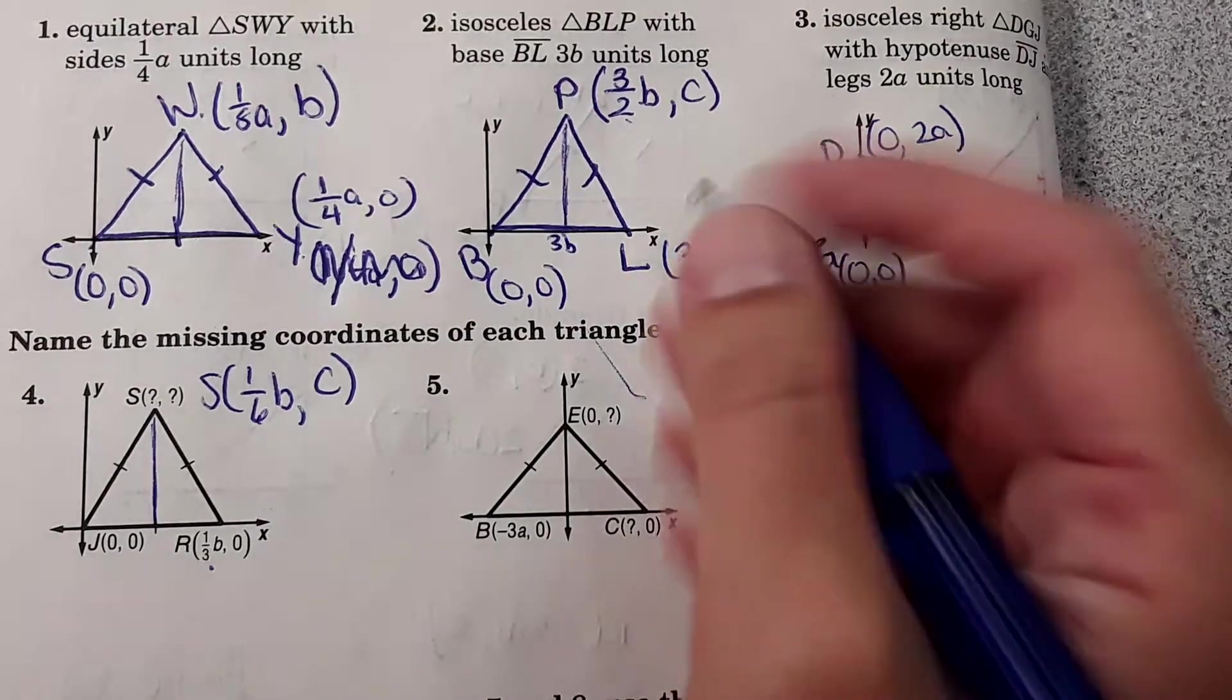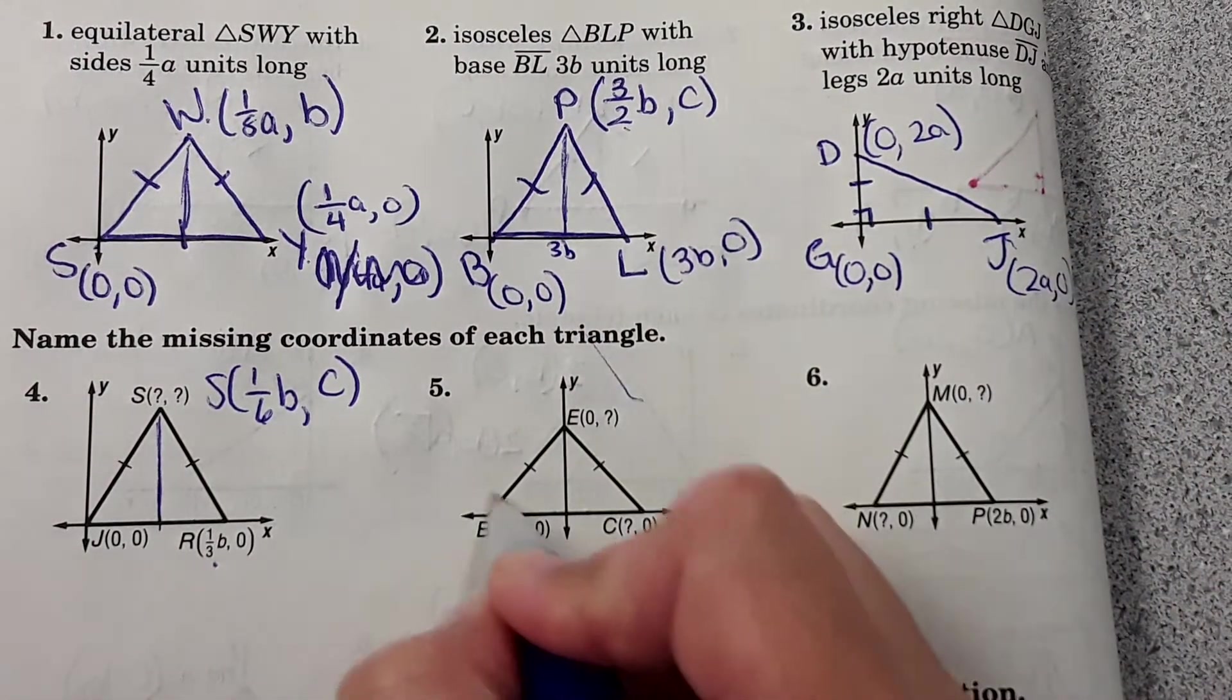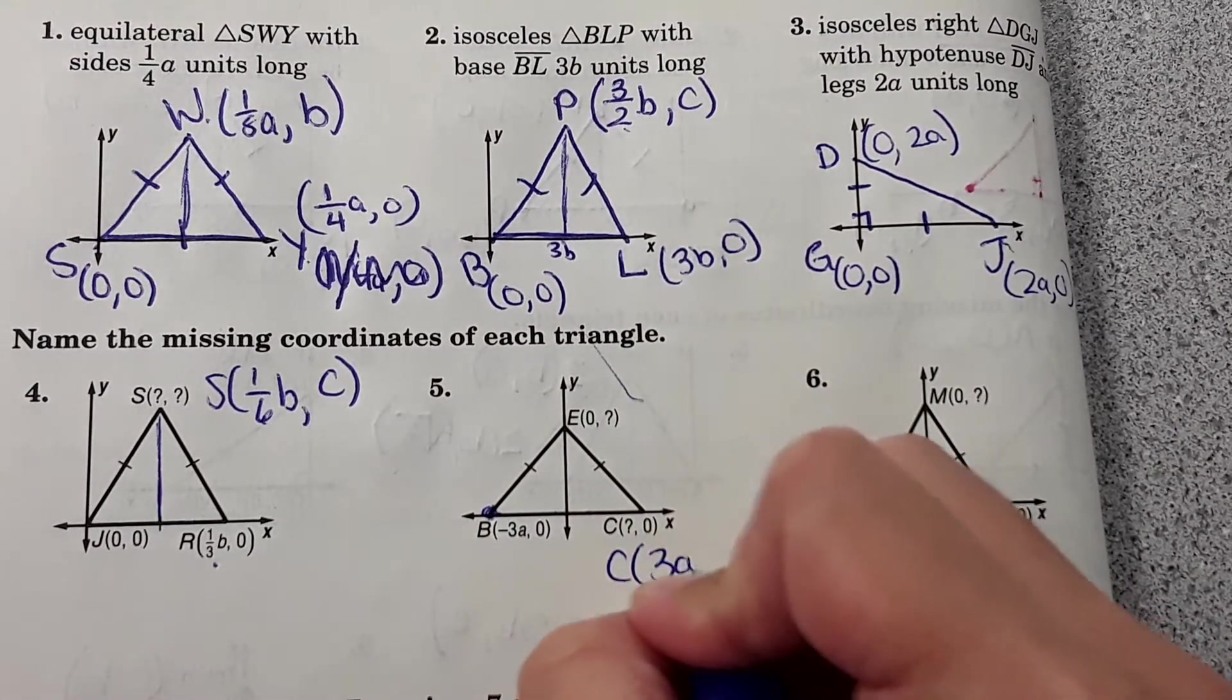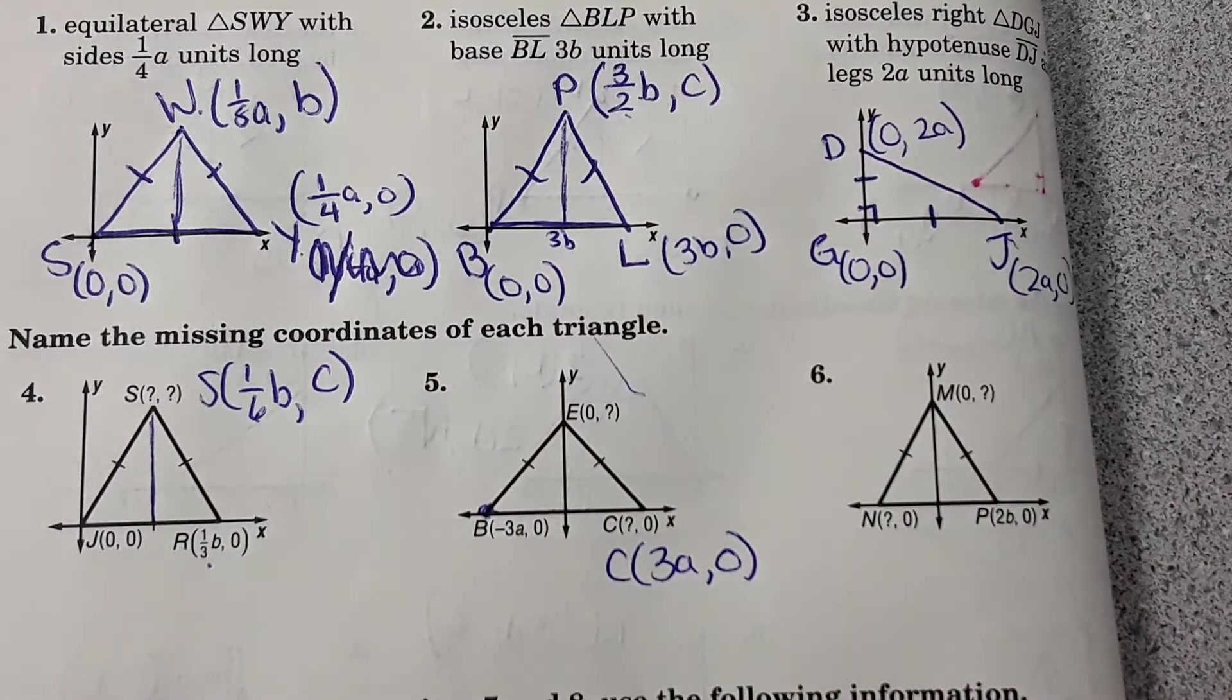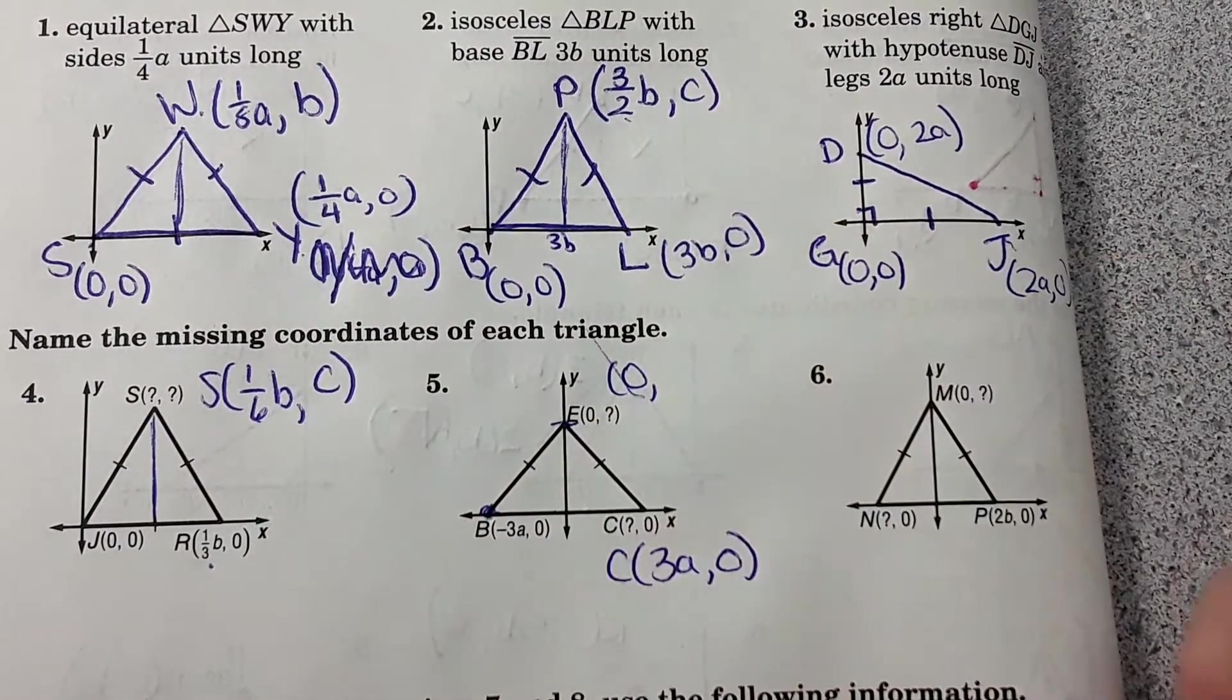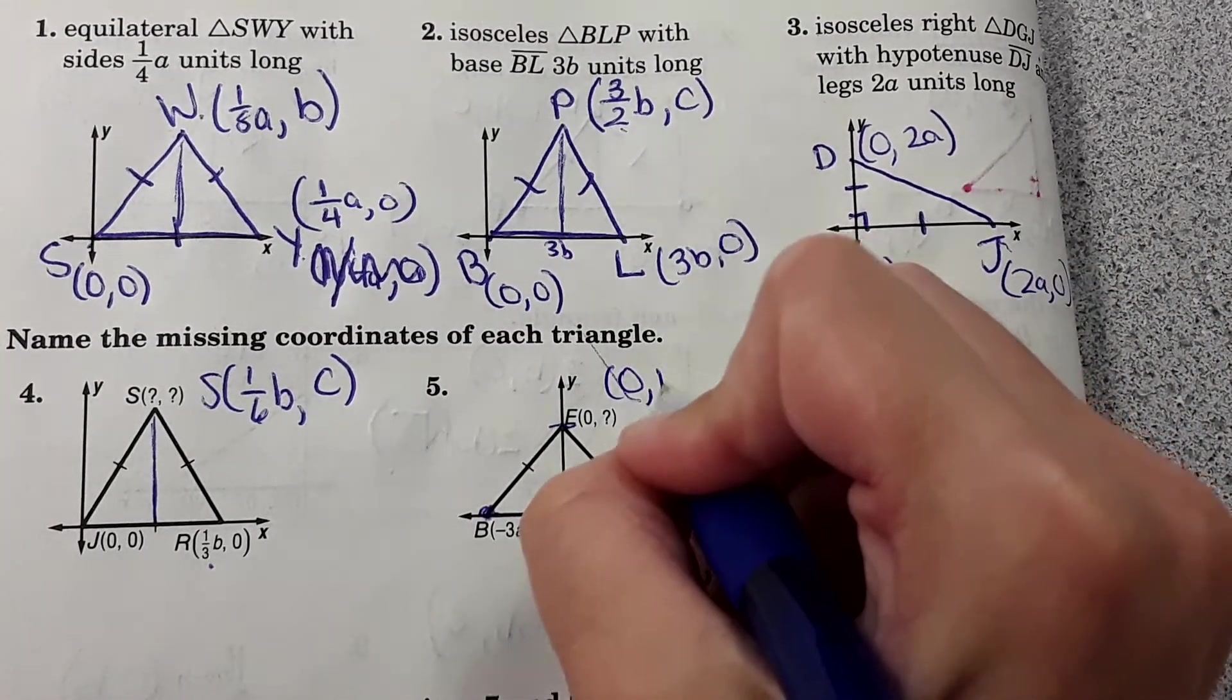And then number five. Number five, it's showing it going negative 3A this way, so it would be positive 3A this way. And then E, for the height here, zero, just choose the next variable, like B.